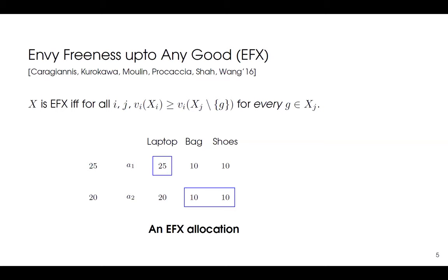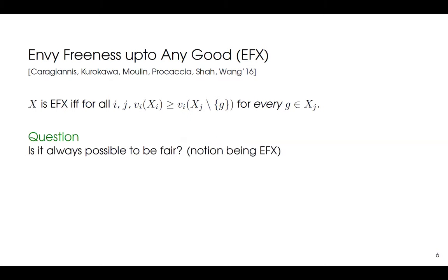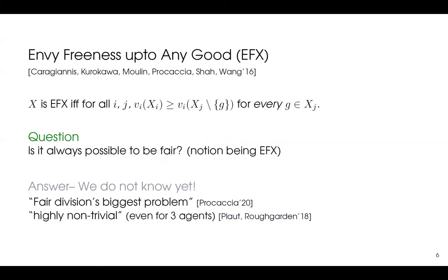Is the definition of EFX clear to everyone? So now the question is: given any set of agents and goods, does there always exist an EFX allocation? It turns out we don't know yet. This is fair division's biggest open question — we don't know whether an EFX allocation always exists, or whether there is a counterexample where no EFX allocation exists. It is highly non-trivial even for three agents.